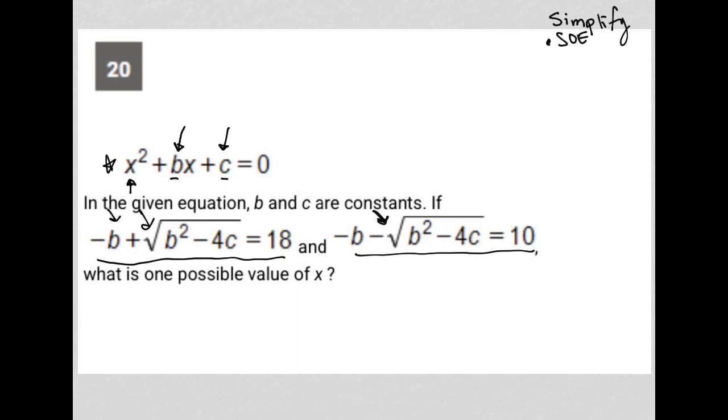I'm going to write the first equation that's provided here: -b + √(b² - 4c) = 18. I'm going to write the second equation right beneath it: -b - √(b² - 4c) = 10.